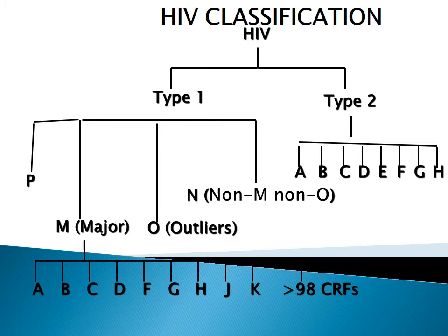A schematic diagram shows the classification of HIV type 1 and type 2. Within type 1, there are groups M, O, N, and P. Within Group M, there are subtypes A, B, C, D, F, G, H, and K, plus 98 circulating recombinant forms. This tells us how heterogeneous this virus can be — a great challenge for vaccine development, because a vaccine developed against subtype A may not cover subtypes B, C, D, or the recombinant forms. HIV type 2 has subtypes A through H.